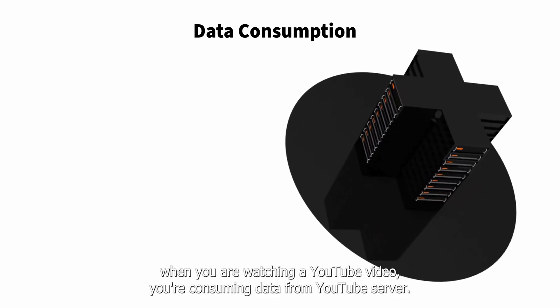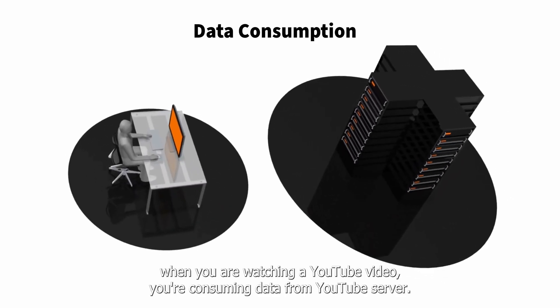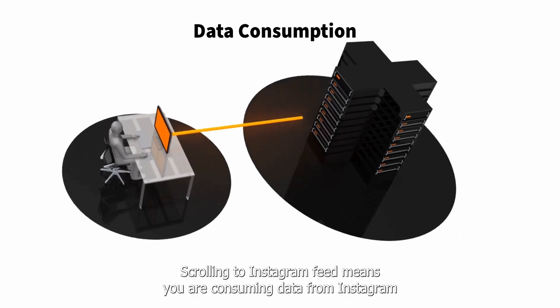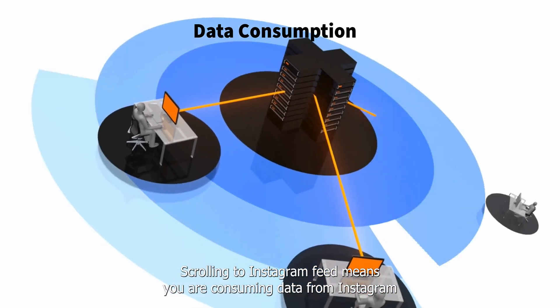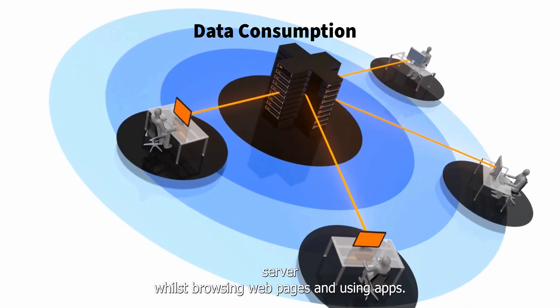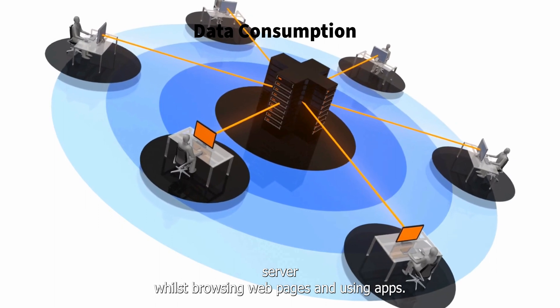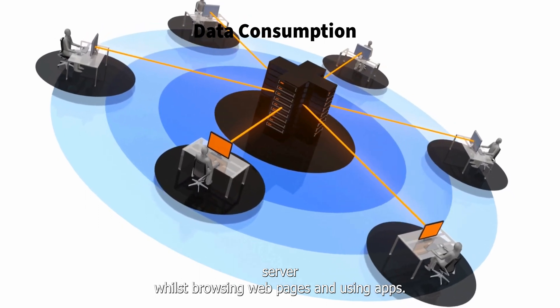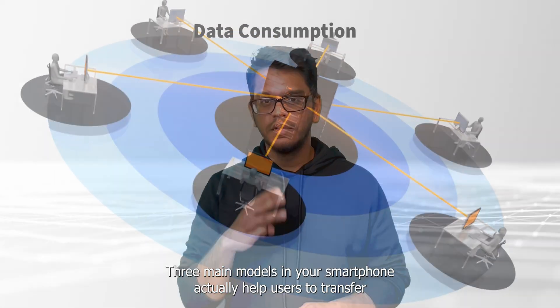For instance, when you are watching a YouTube video, you are consuming data from the YouTube server. Scrolling through your Instagram feed means you are consuming data from the Instagram server. Downloading files, browsing web pages, and using apps — all of these concern data consumption.